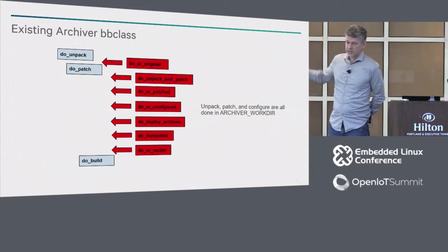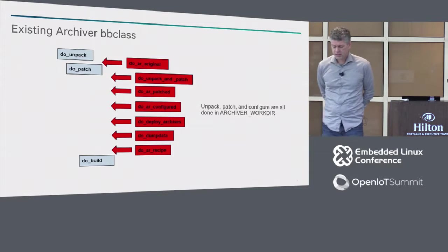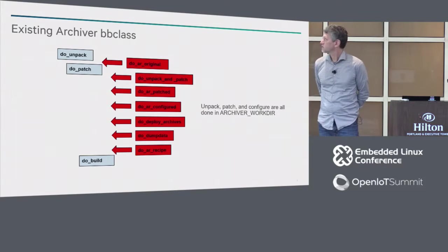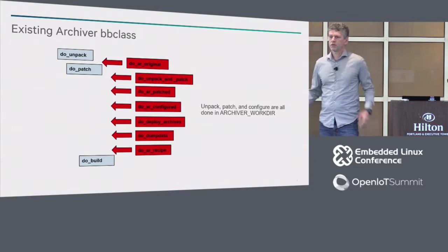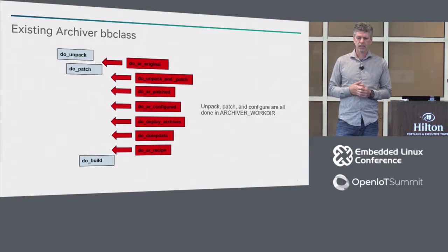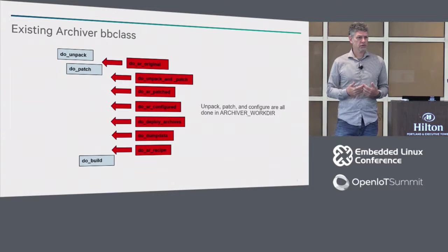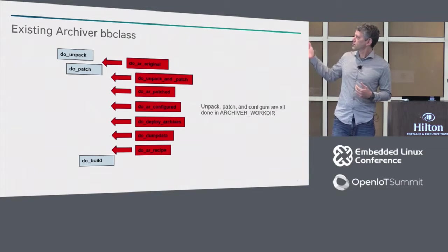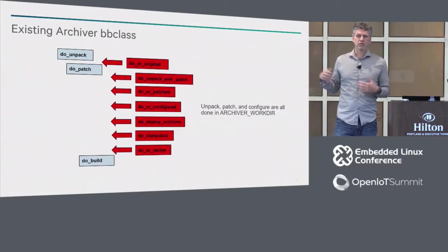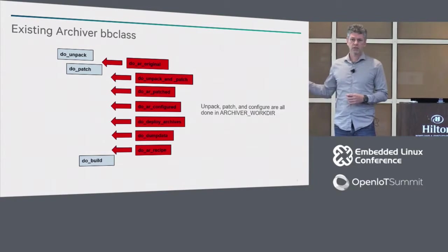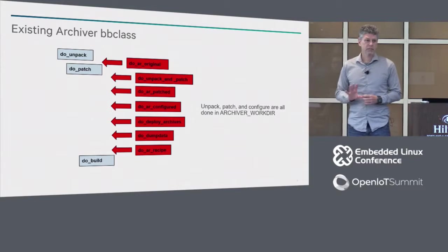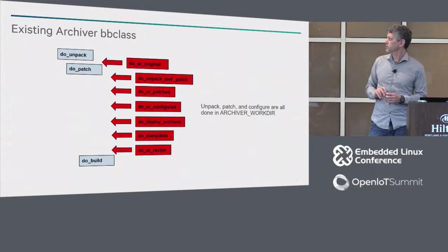There is something called an archiver BB class in Yocto. The purpose of it seems to be that when you're releasing an image containing something like GPL and have requirements to release the source files related to your image, this is a way to package up all the source related to those files and distribute them for compliance. It's not really about license compliance the way it was intended, but it may actually be useful towards implementing something for license compliance.